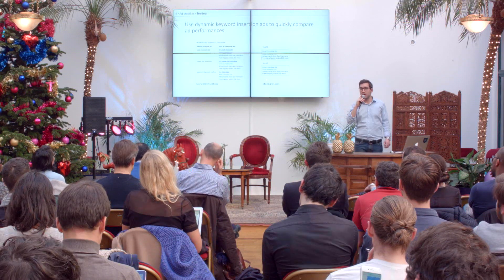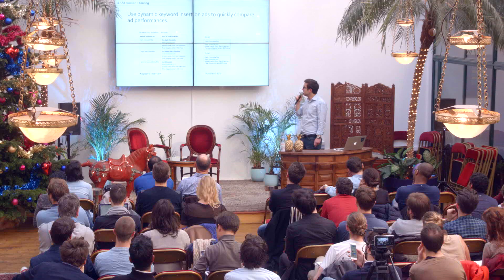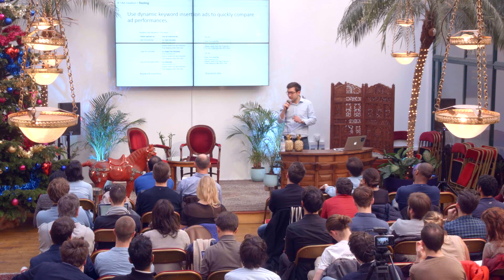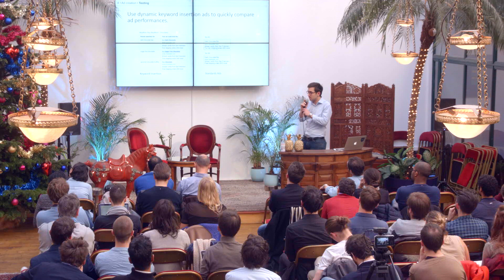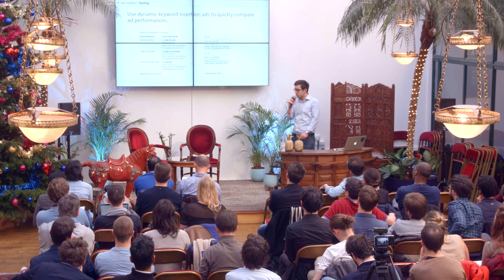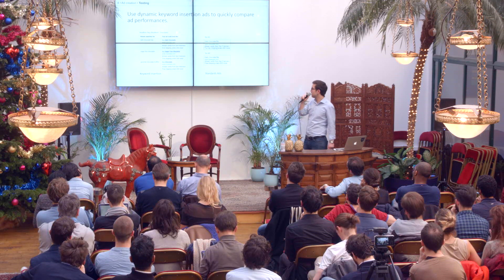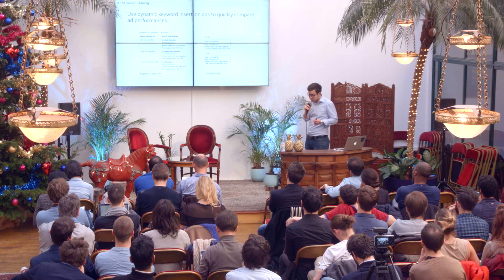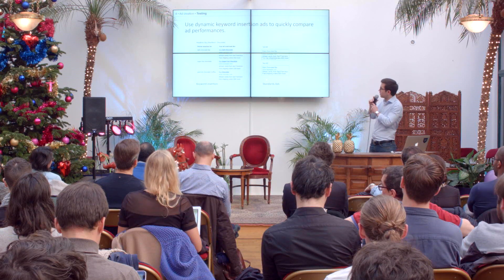What you can also do to improve your ad performance is test different types of ad formats. There's the keyword insertion ad — on the left in this example. Basically, you feed into your headline a keyword that Google will use if the user's search query is more than 25 characters. In the last example, 'gourmet chocolate truffles' is too long, so it's replaced by 'a chocolate.' It's an automatic format that works really well because it can match the user's query and increase click-through rates.